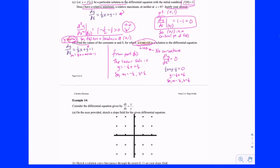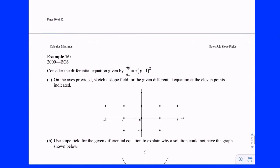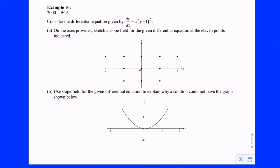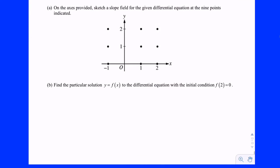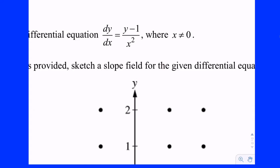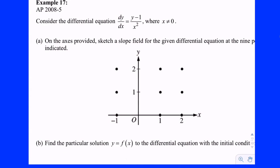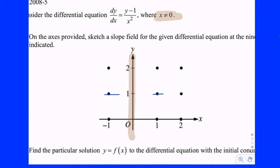Let's jump to example 17 — 2008 exam number 5. Consider this differential equation where x cannot be zero. If you ever have a zero in the denominator and you place a point, you'd draw a vertical segment. But the only value where that happens here is x equals zero, and x cannot equal zero — not just in the differential equation, but in the solution as well.